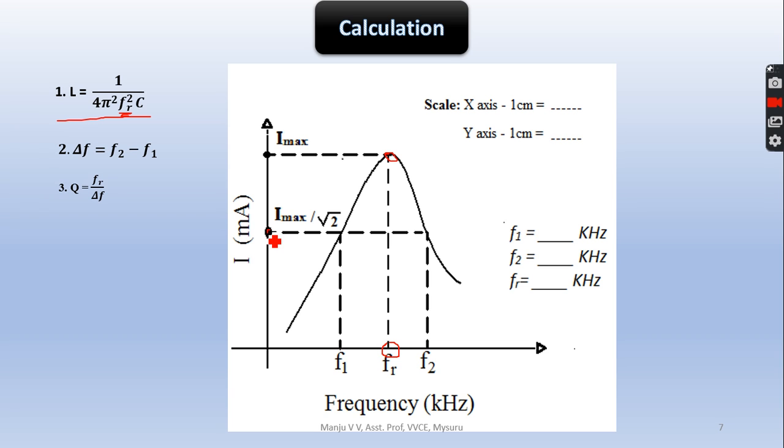You have to take maximum current divided by √2 and you will get the IRMS value. From the IRMS value, draw horizontal line such that it should cut the frequency curve at two positions. Draw vertical line from that and call it as F1 and F2. Difference between F1 and F2, you will get the bandwidth.